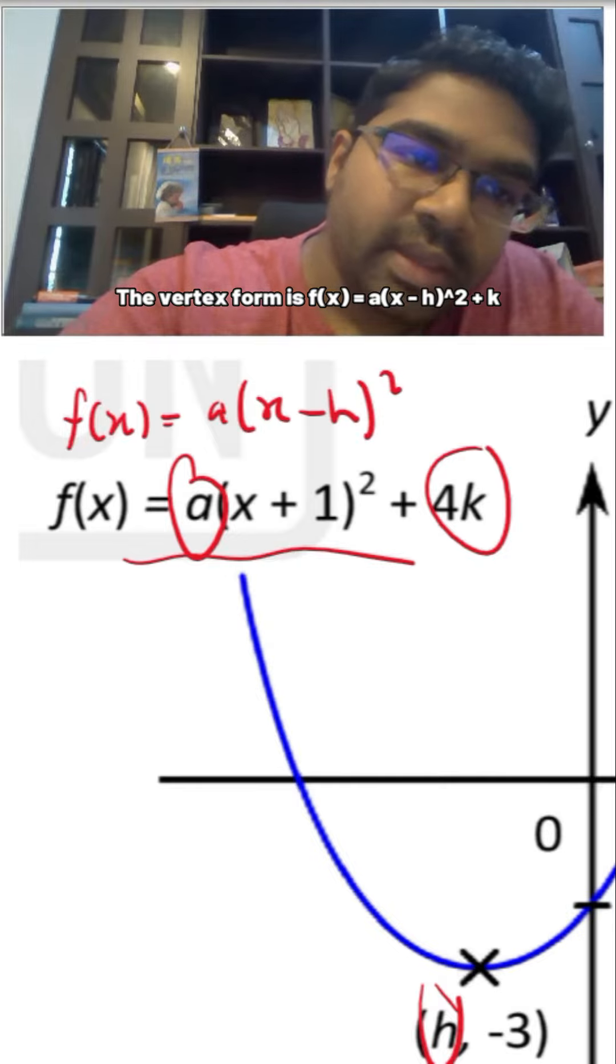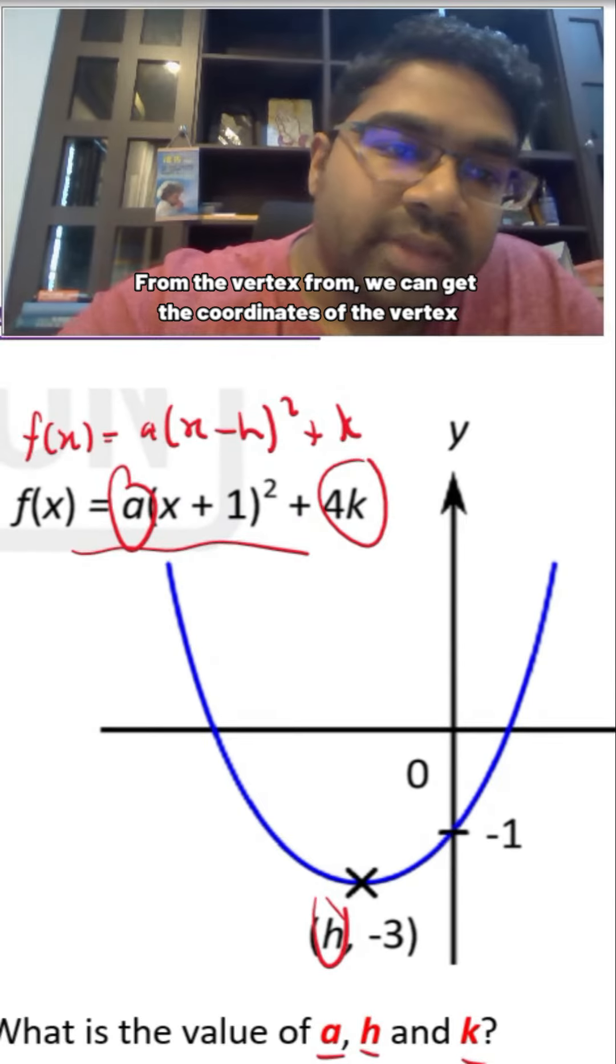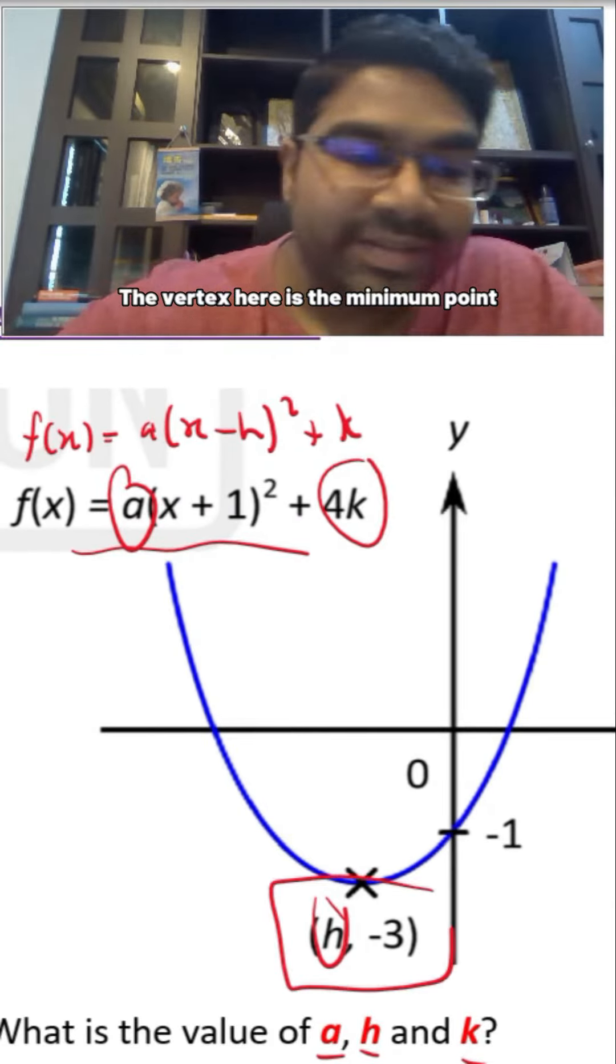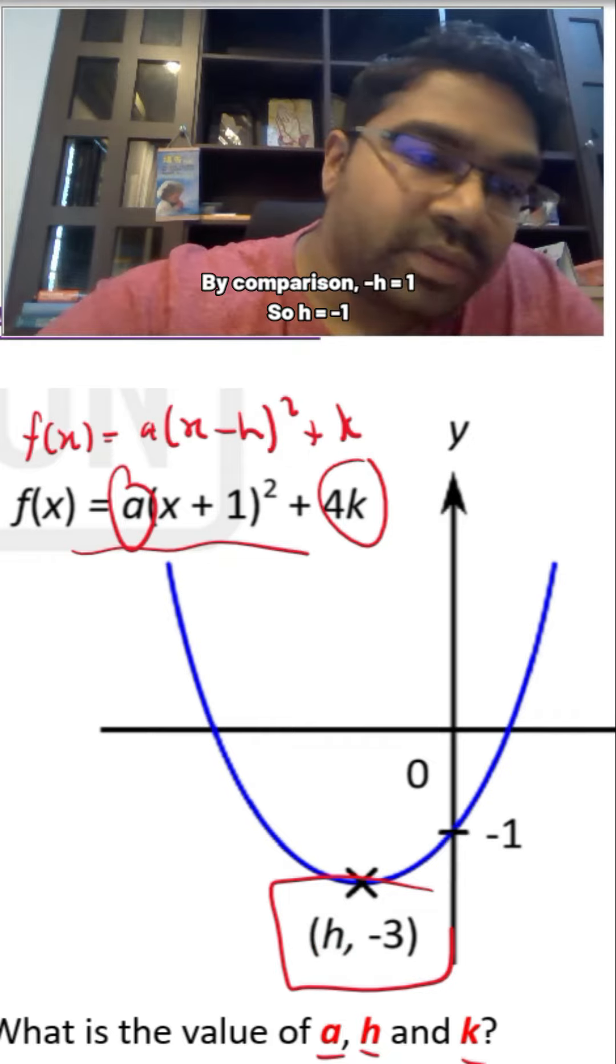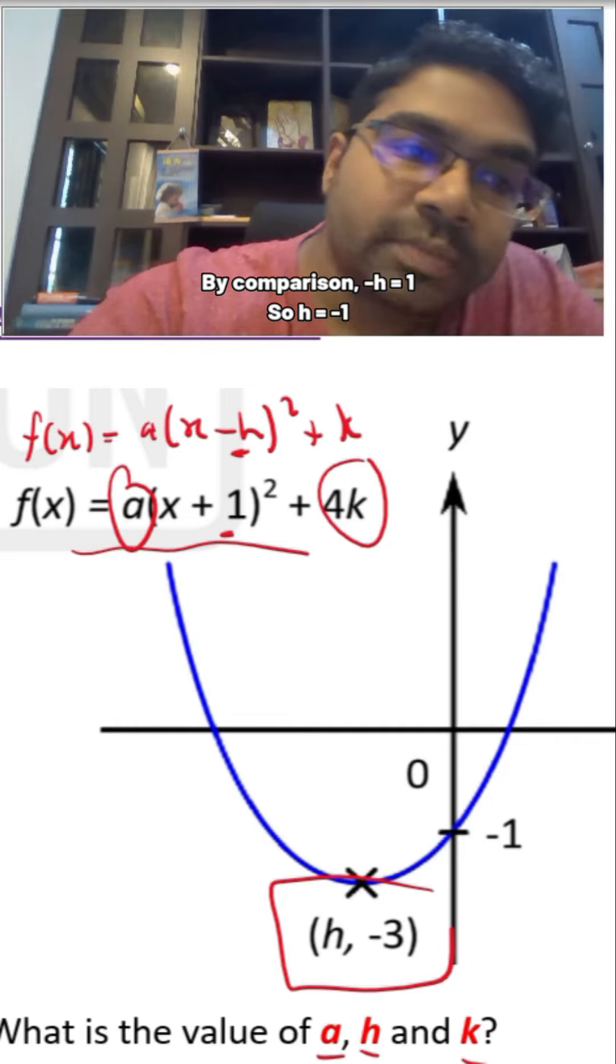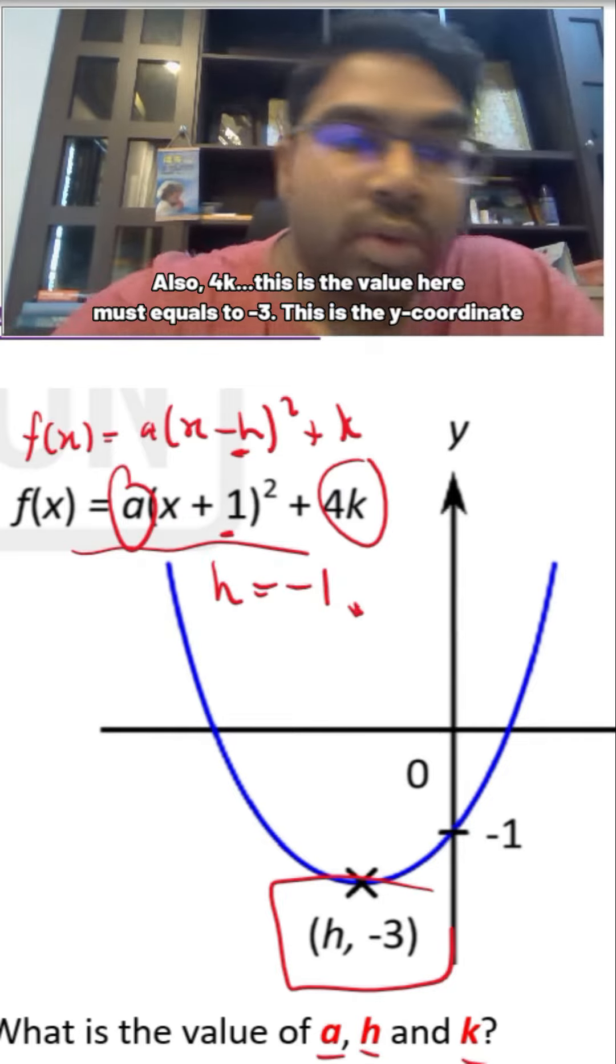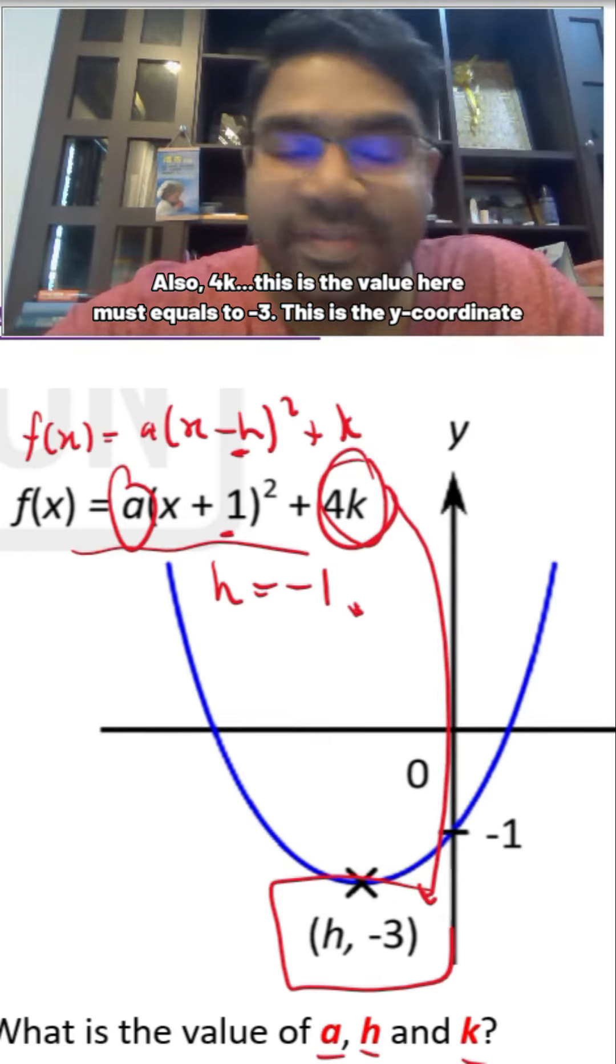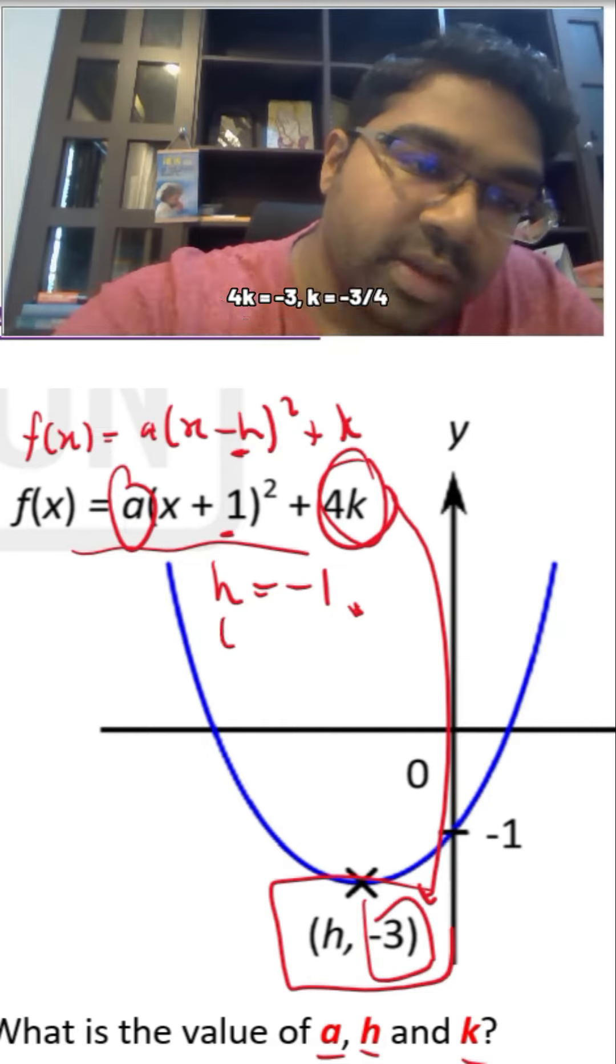From the vertex form, we can get the coordinates of the vertex. The vertex here is the minimum point. By comparison, negative h is positive 1, so h is negative 1. Also, 4k, this value here, must equal negative 3. This is the y-coordinate. 4k is negative 3, k is negative